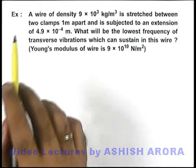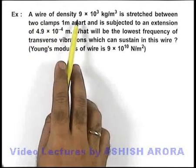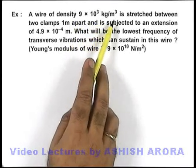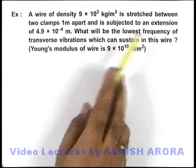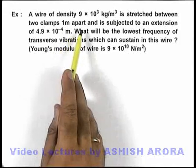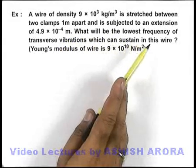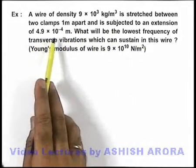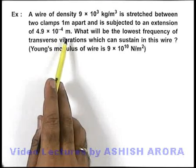In this example, we are given that a wire of density 9 × 10³ kg/m³ is stretched between two clamps 1 meter apart and is subjected to an extension of 4.9 × 10⁻⁴ meter.